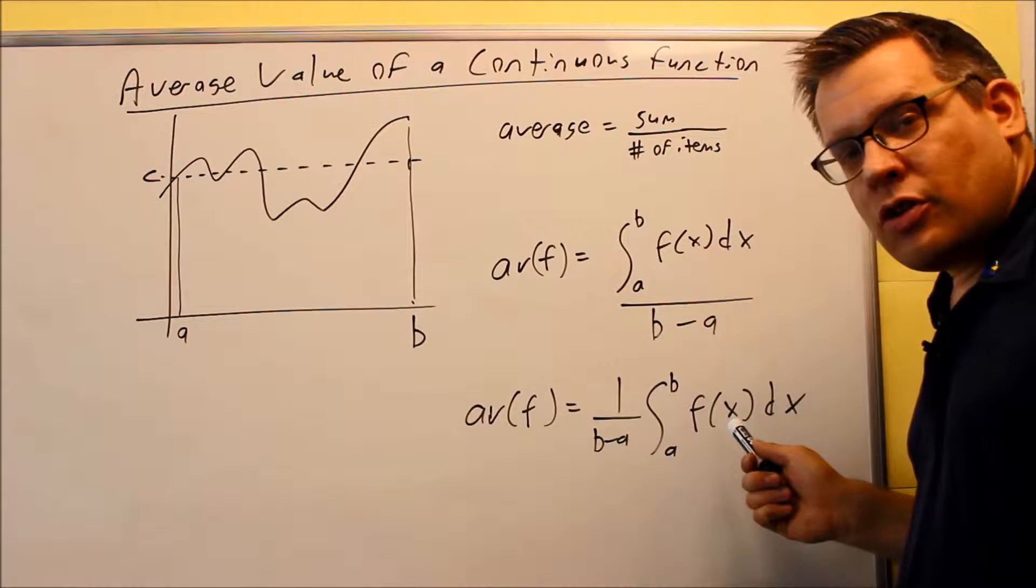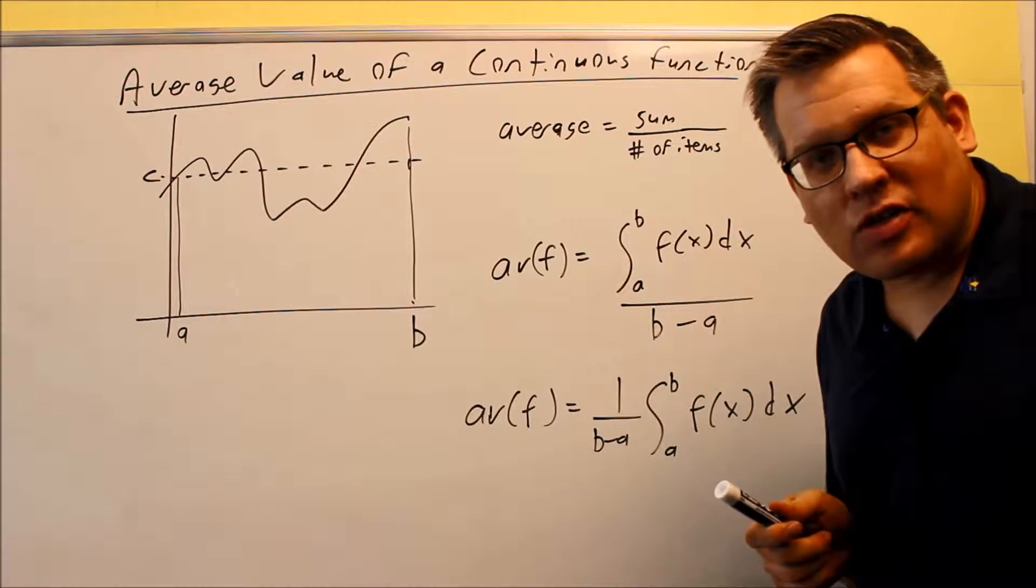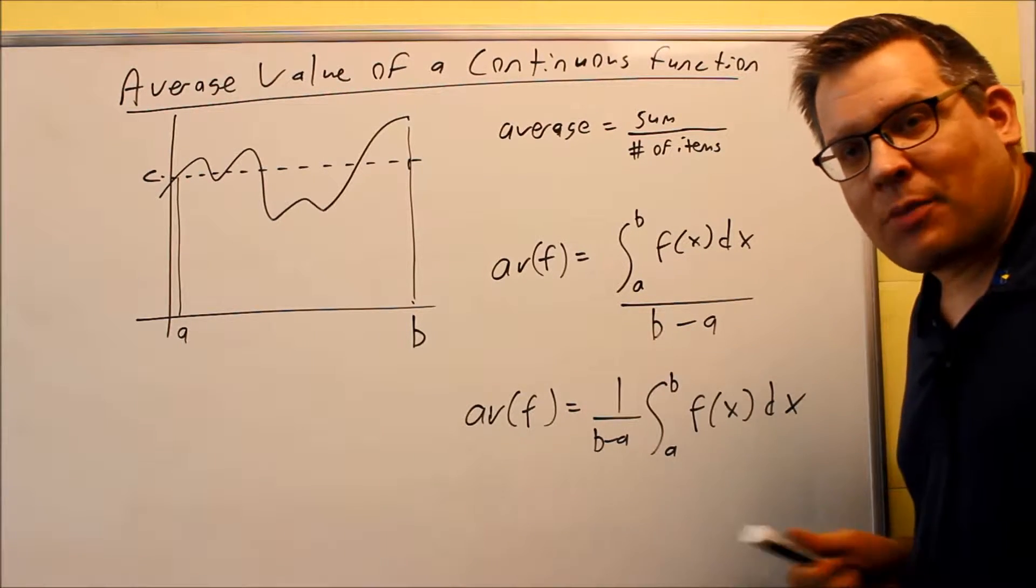So you just basically do the definite integral like we've been doing before, then you just multiply it by 1 over B minus A. So now, let's take a look at an example illustrating this rule.